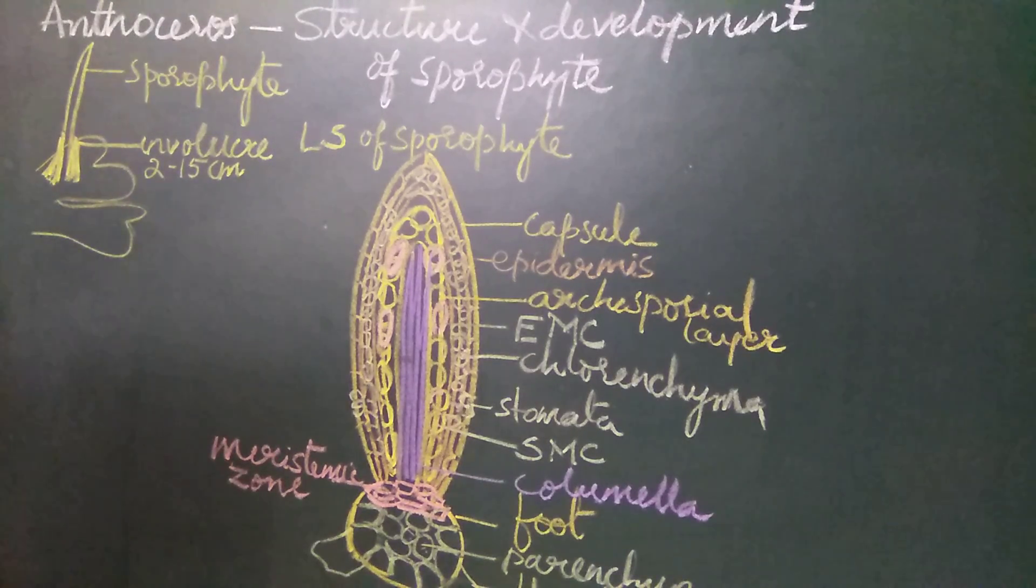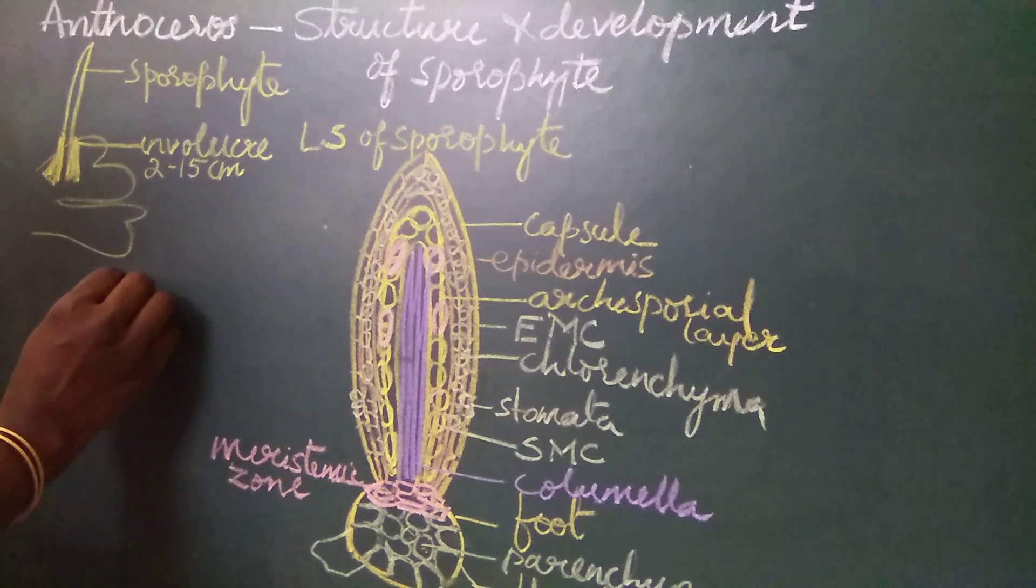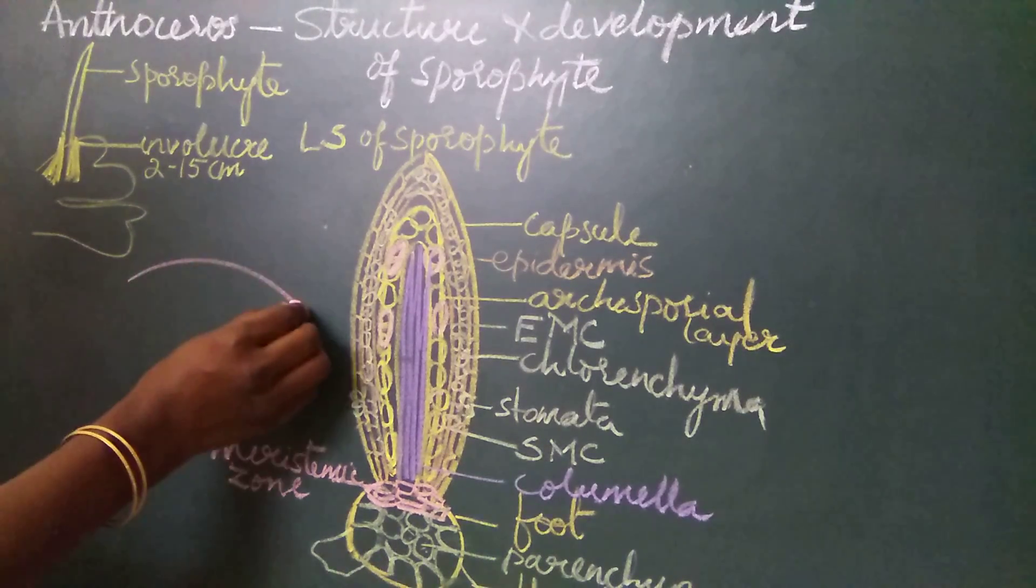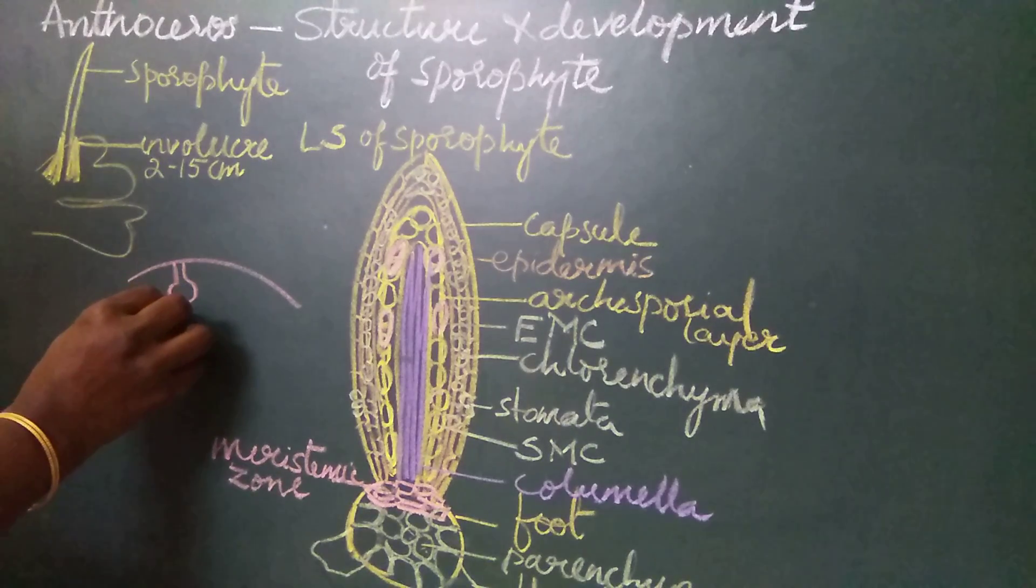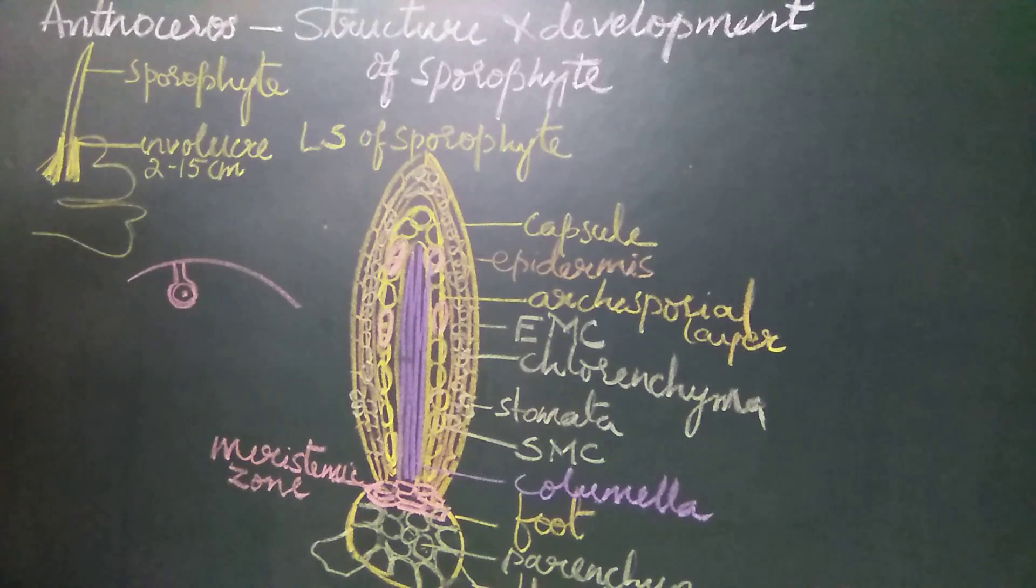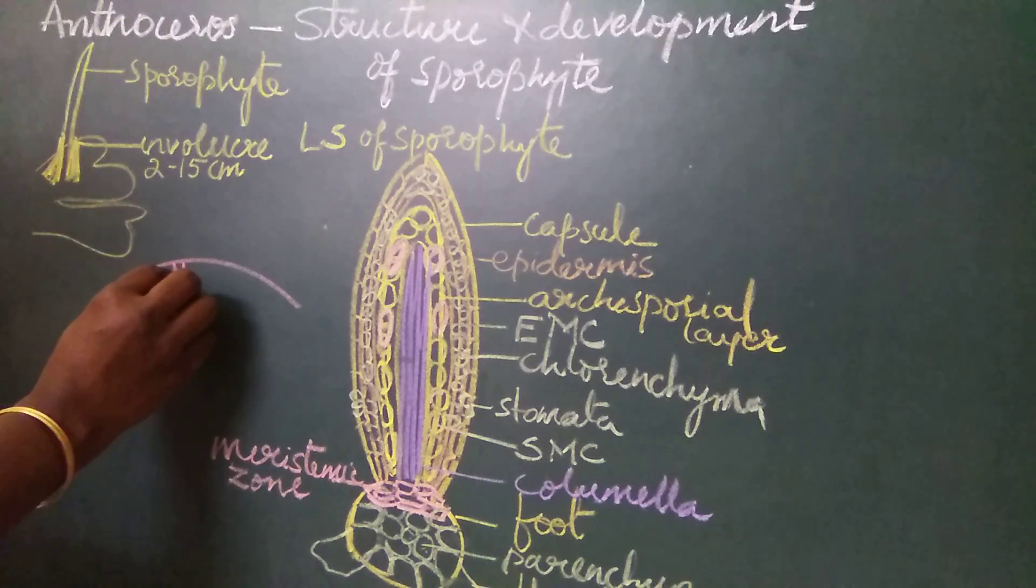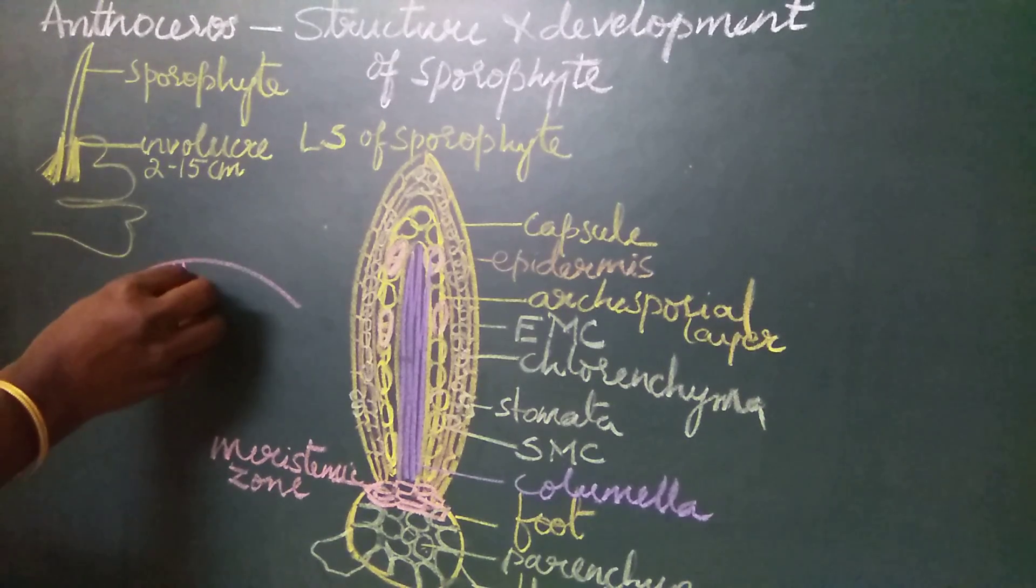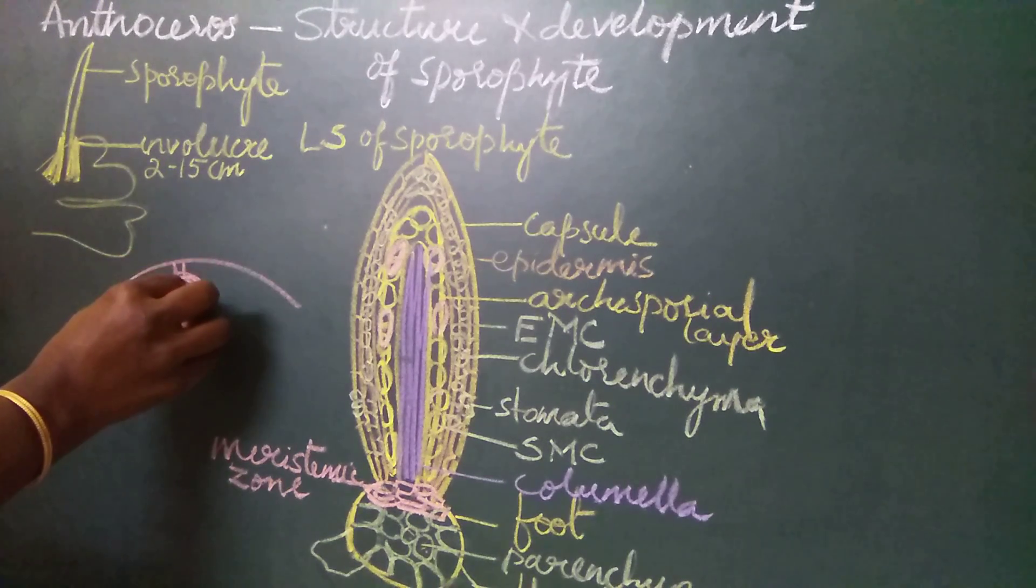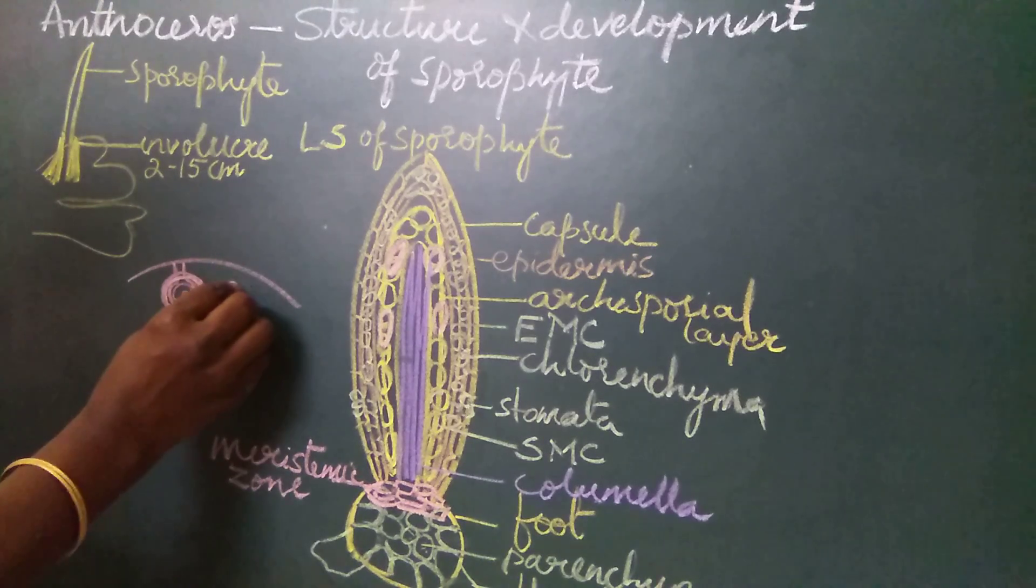This zygotic cell is seen on the dorsal surface of the thallus inside the archegonium. When we take a vertical section of the thallus, we find the archegonium on the dorsal surface with the fertilized egg. After fertilization, the zygote develops a cellulosic wall around it called the calyptra.